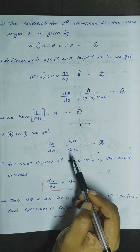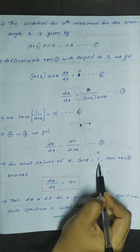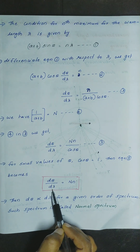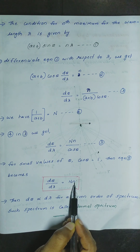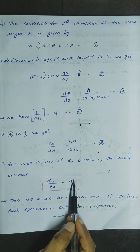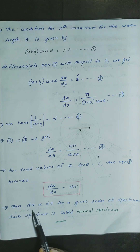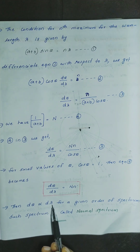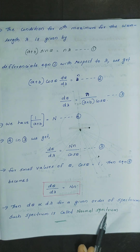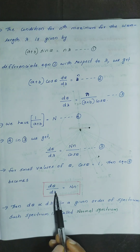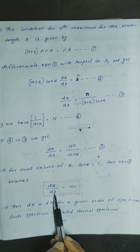Now, for a small diffraction angle, where theta is a very small angle, we consider cos-theta approximately equal to one. Then, a plus b times d-theta by d-lambda equals n. This is the expression for dispersive power of a grating. Here, d-theta is directly proportional to d-lambda for a given order of spectrum. Such a spectrum is called a normal spectrum.